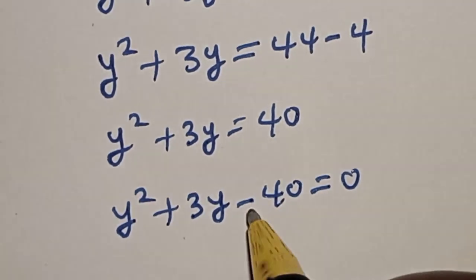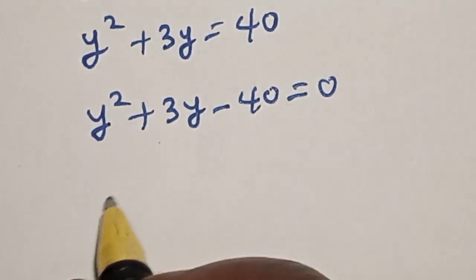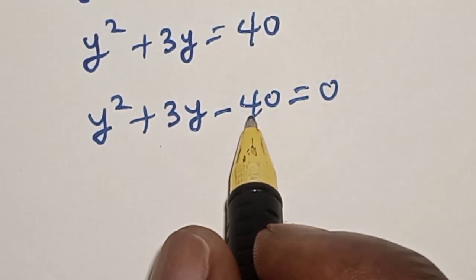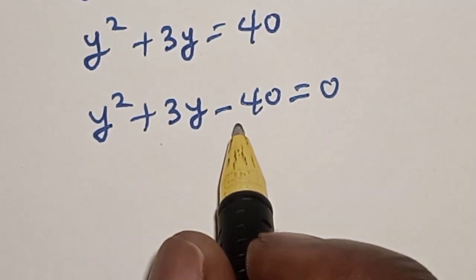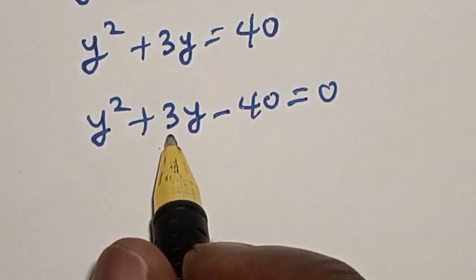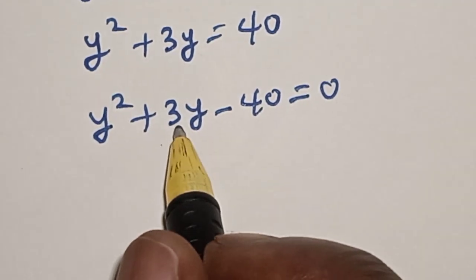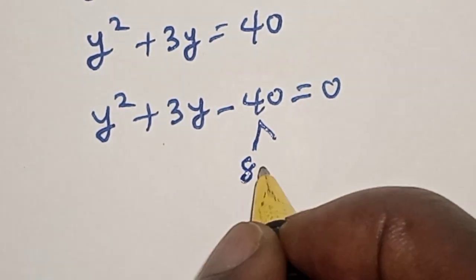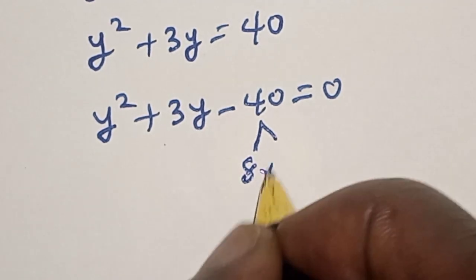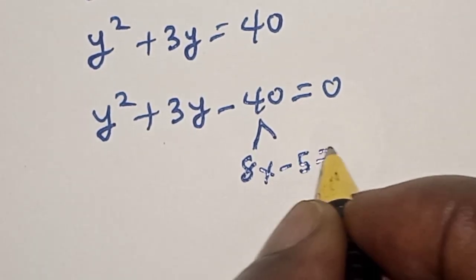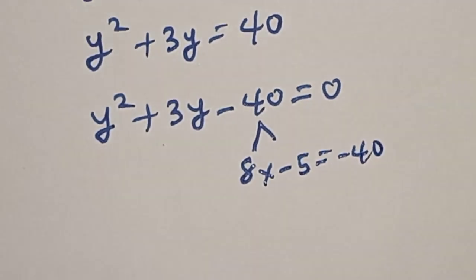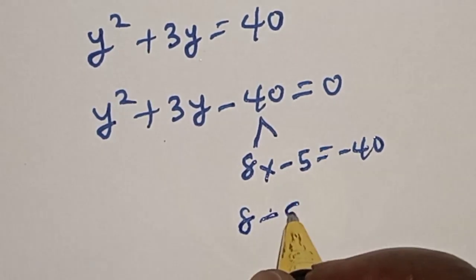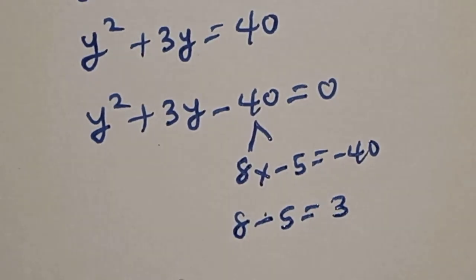This is a quadratic equation. Let's solve it using the factorization method. We look for two numbers such that their product gives minus 40 and their sum gives plus 3. If we have 8 and minus 5: 8 multiplied by minus 5 equals minus 40, and 8 minus 5 equals plus 3. Those are the product and sum.